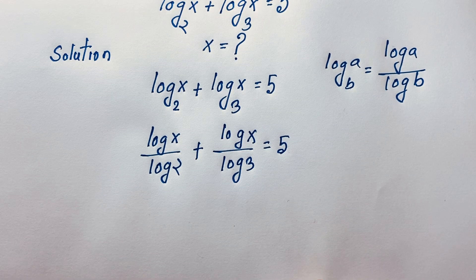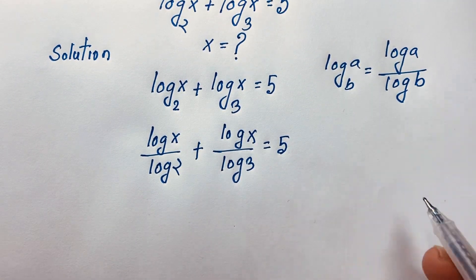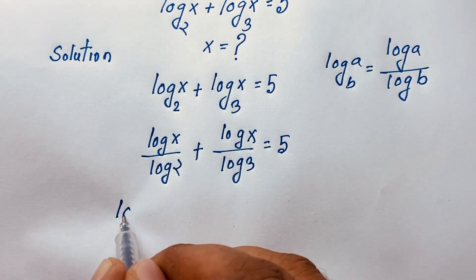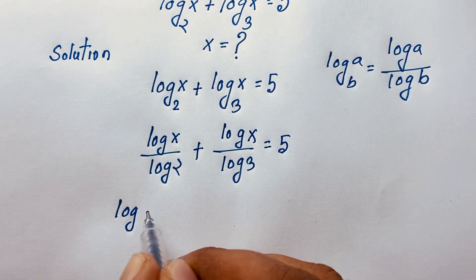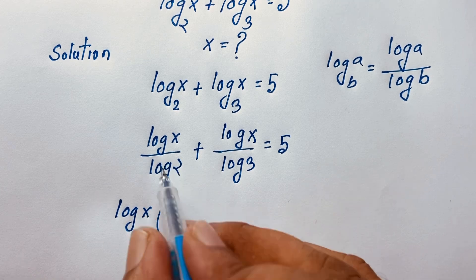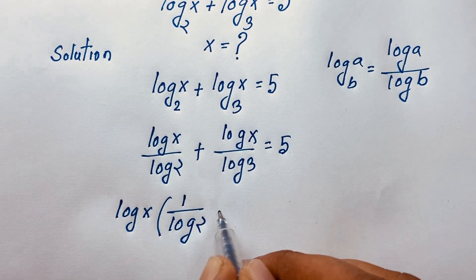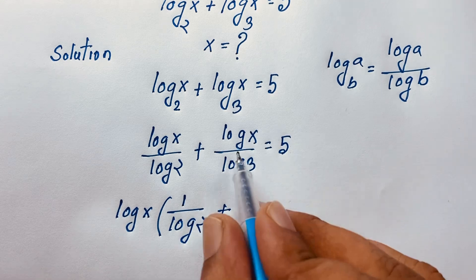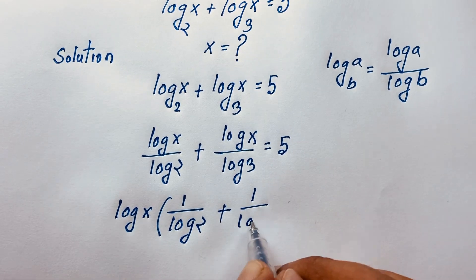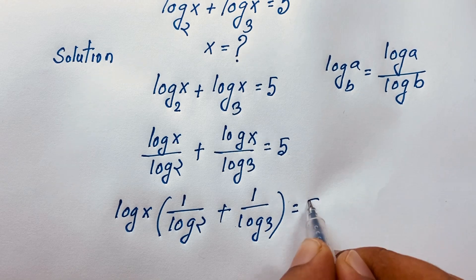Here, log x appears in both terms. I can see log x is common, so I factor out log x. Then dividing through, it becomes log x times (1 over log 2 plus 1 over log 3) is equal to 5.